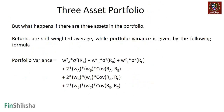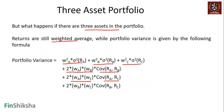Let's recap: the returns are still a weighted average when there are three assets in the portfolio. The variance is given by wA²·σA², wB²·σB², wC²·σC², and then we take two assets at a time, find the covariance between those two, and calculate wA·wB·cov(A,B), wA·wC·cov(A,C), and wB·wC·cov(B,C).